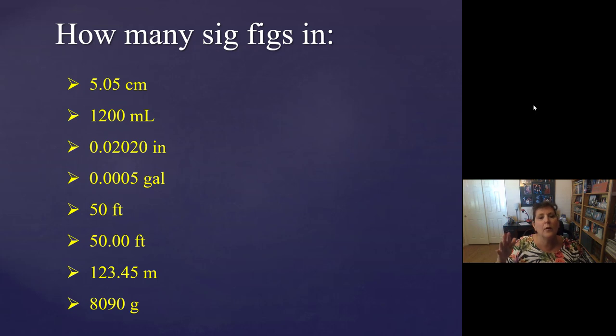0.02020. The 0.0 is in front. Zeros in front never count. But the 2020 do count, so four. Four sig figs. 2020. The first zero is in between the two, so it's in between. It counts. The last zero is at the end and it's after a decimal point, so it counts. So the 2020 counts four sig figs.